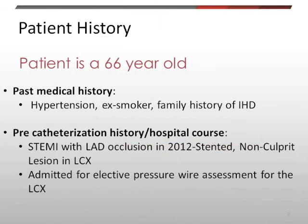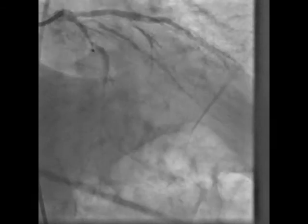The patient we have is a 66-year-old with a past medical history of hypertension, an ex-smoker with a family history of ischemic heart disease. This patient had a STEMI with LAD occlusion in 2012 which was stented, and a non-culprit lesion in the left circumflex artery. The patient was admitted for elective pressure wire assessment of the left circumflex artery.